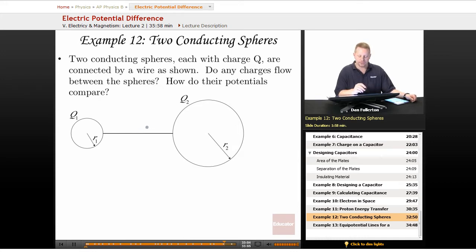Well, the first thing we have to realize is when we connect them by a wire, all of a sudden they must be at equal potential. Anything that's connected by a conductor is going to be at equal potential. So once we do that, these have to be at the same voltage.